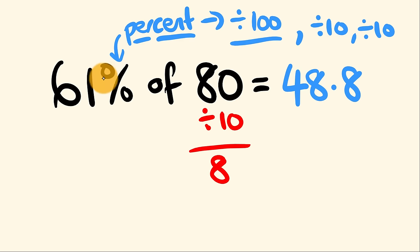Then over here, to finish off the percent part, we're going to be dividing 61 also by 10. 61 divided by 10, this is equal to 6.1. And now we do the multiplication. We have 6 multiplied by 8, this is 48.